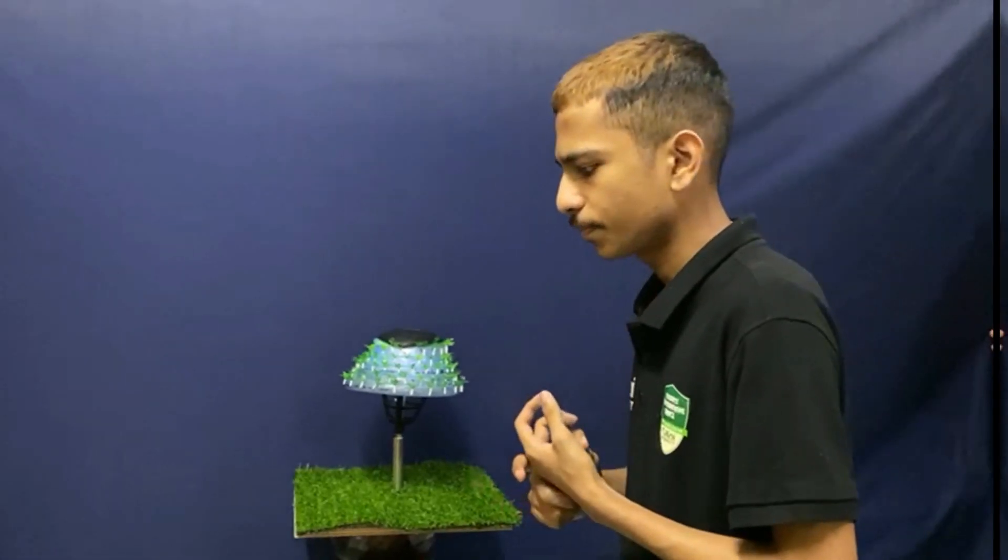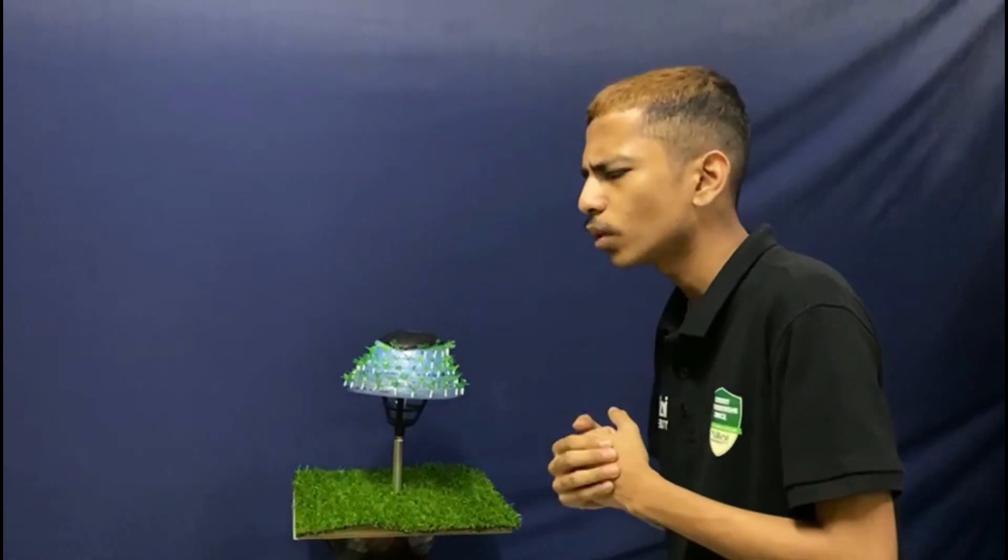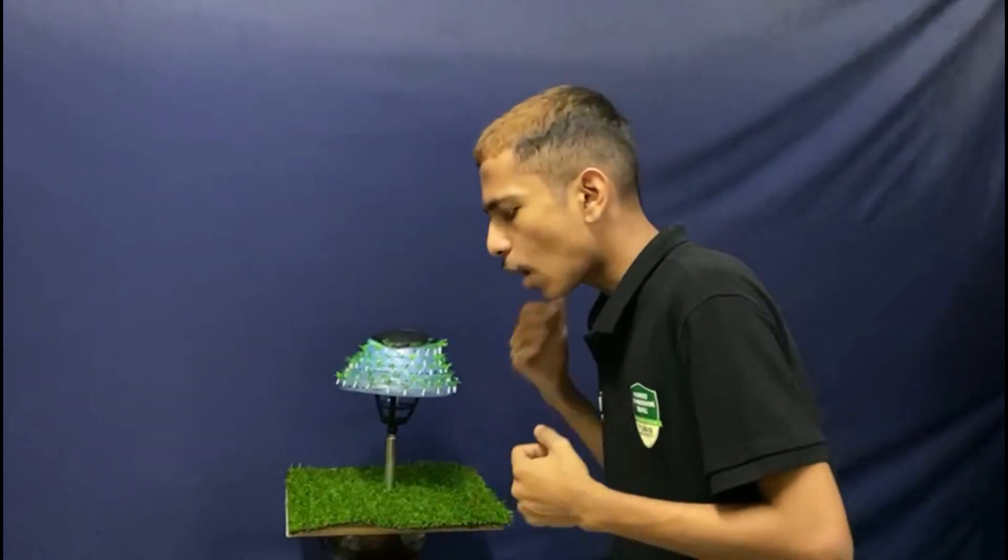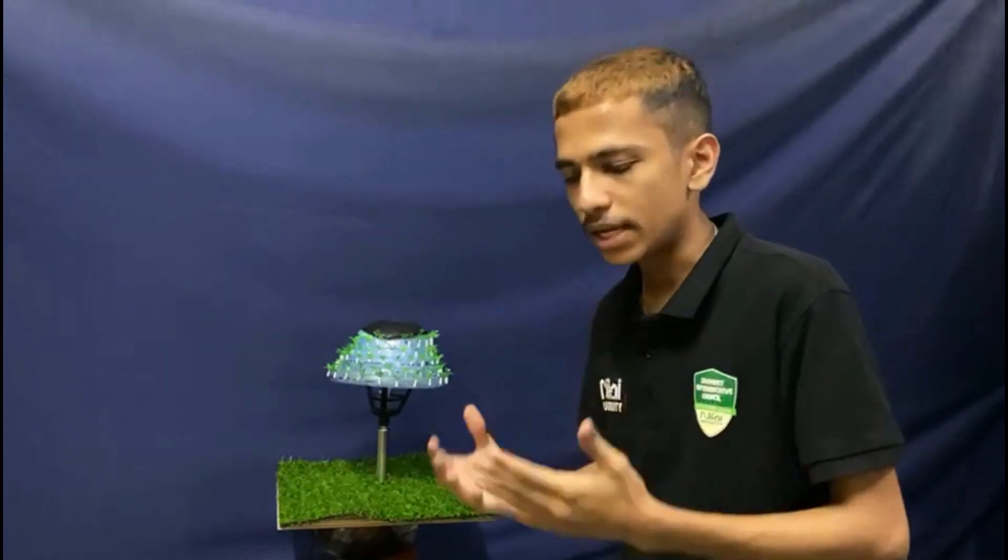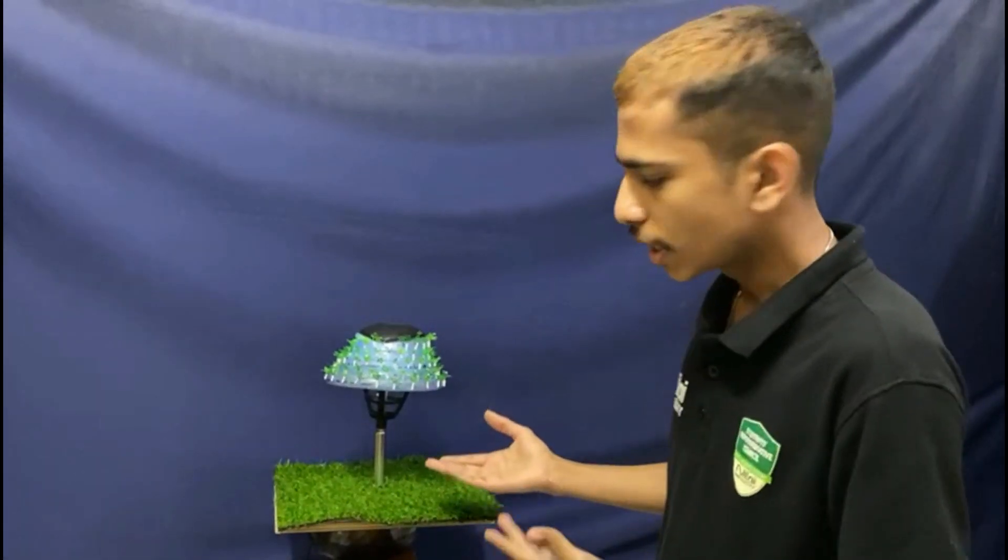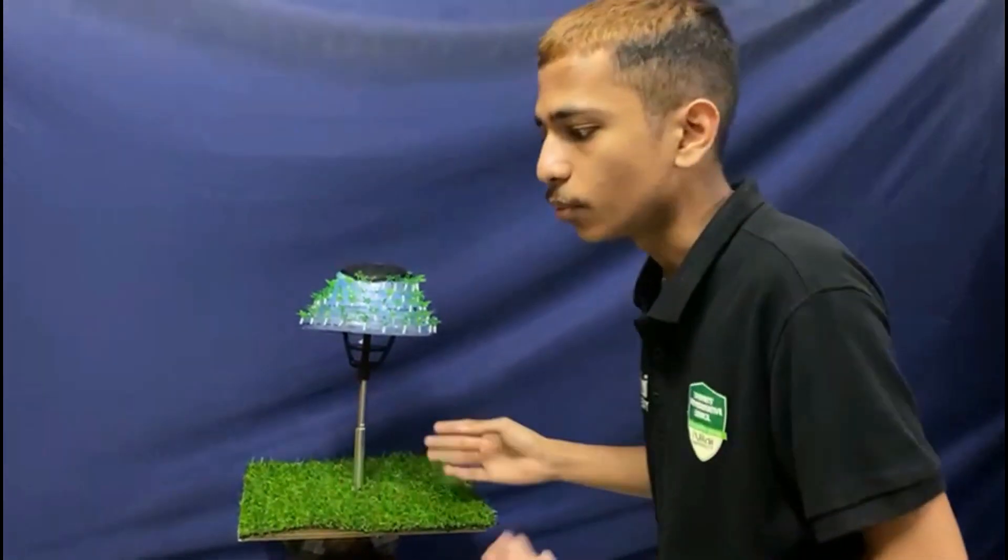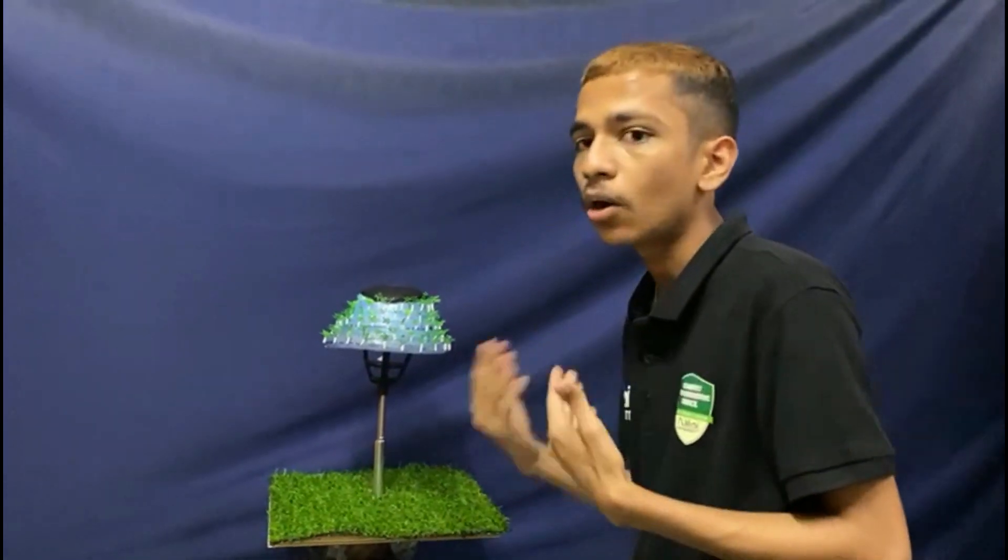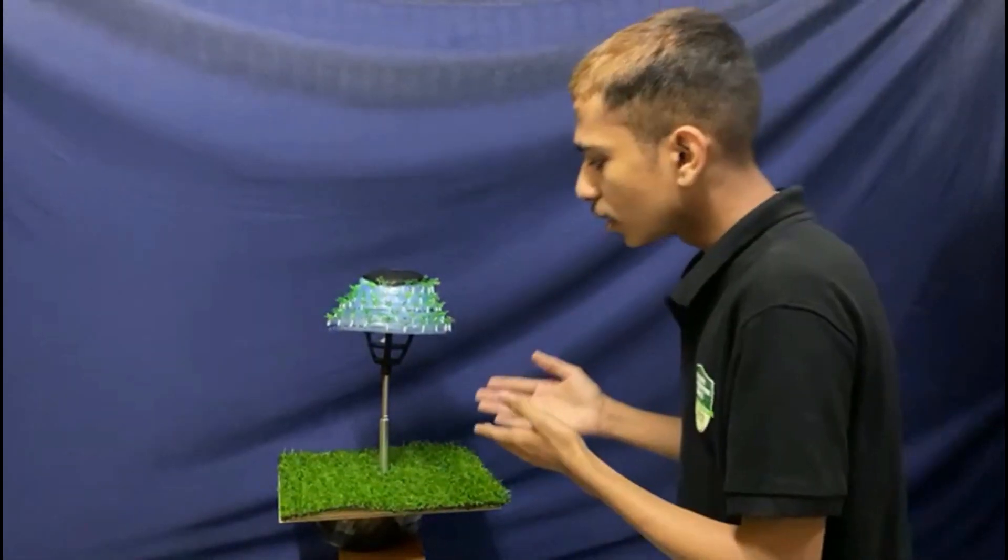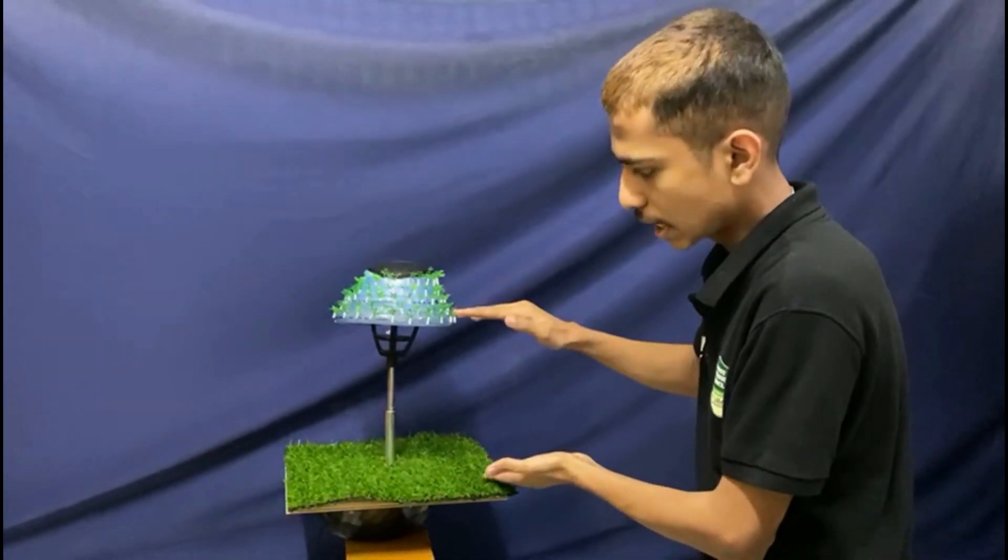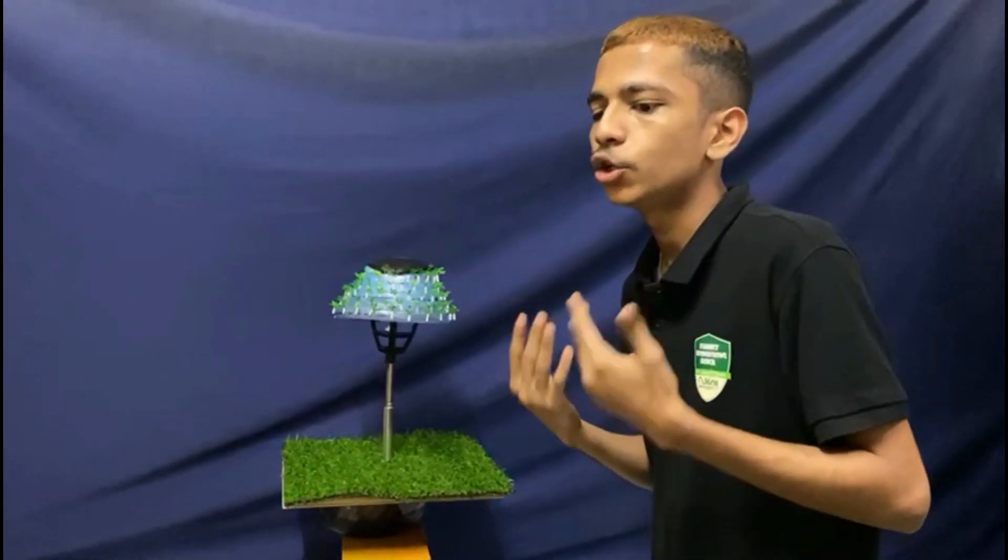The second feature here we have is the adjustable tree trunk. You might be wondering why we have this. Our main concern for this hydroponic tree is because we want to save space. So in this model, as you can see I will display now, we can adjust the height by a mechanism that we have installed here. But right now I'm doing it manually because as you said, this is a prototype.